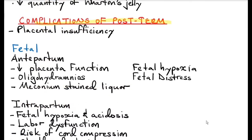Complications of post-term pregnancy: when a pregnancy overruns the expected date of delivery, the placenta also begins to expire. Placental insufficiency occurs because of placental aging, with placental infarcts and calcification. If the patient also has complications like preeclampsia, hypertension, or diabetes, this further worsens the placental insufficiency and placental infarcts.